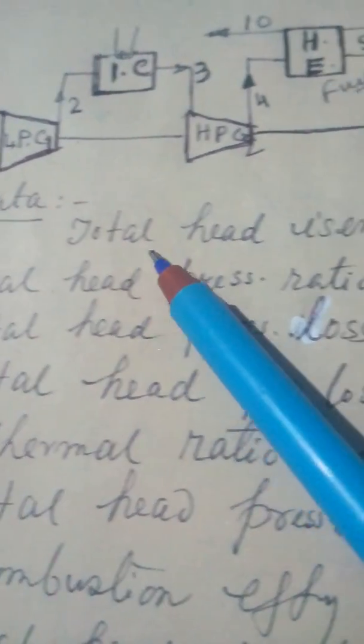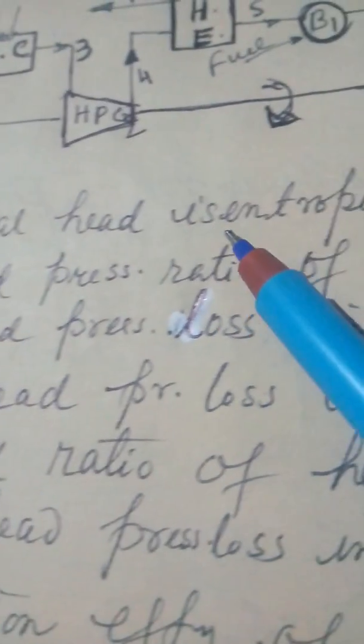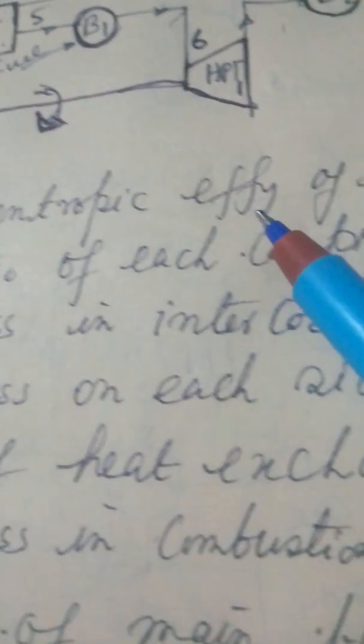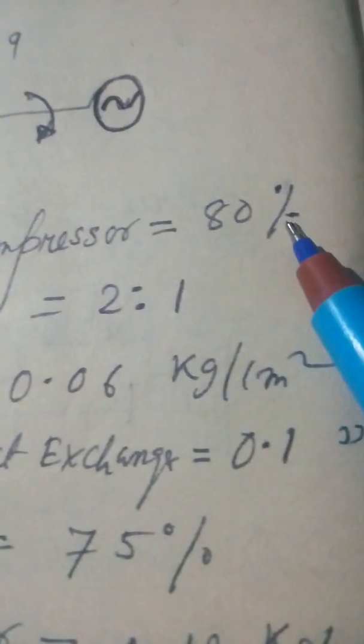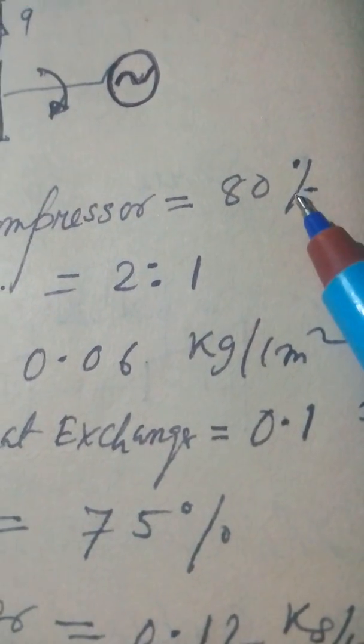Total head isentropic efficiency of each compressor is equal to 80%.